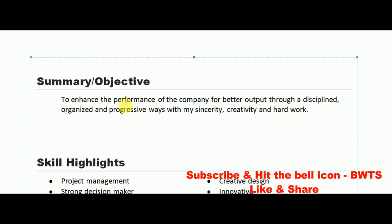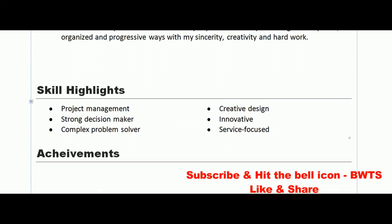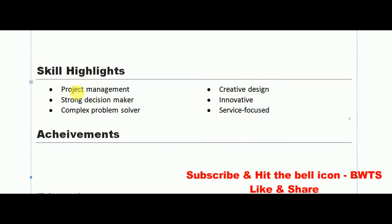After writing your objective, the next section is skill highlights. Skill highlights are the skills you possess. For example: strong decision maker, complex problem solver, creative design, innovative, project management. You can mention that you are focused and innovative. Whatever skills you have, mention them under skill highlights — maximum up to six skills is enough.